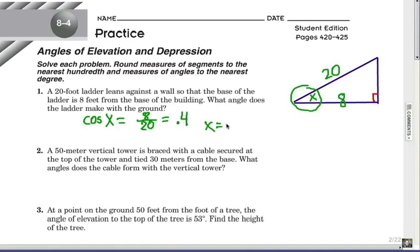Alright, so 66.4 degrees rounded. Alright, so that's the idea. Use the inverse function if you're looking for an angle and use just the regular function value to find the length of the side. Alright, let's look at 2 and 3.